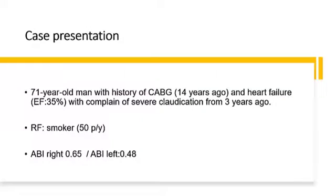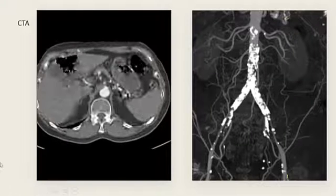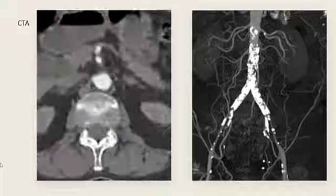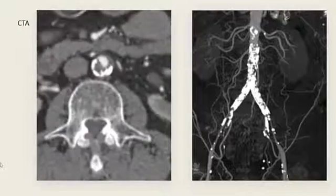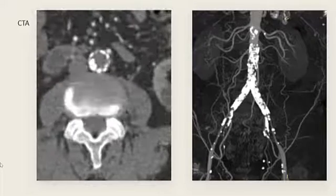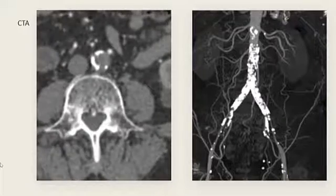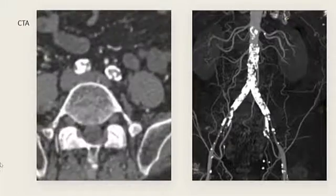Our case is a 71-year-old man with a history of coronary artery bypass graft and heart failure, presenting with severe claudication for three years. Pre-procedural CT angiography showed severe calcified infrarenal aorta and bilateral iliac arteries, with near-total occlusion of the infrarenal aorta and common iliac arteries, with good runoff at the external iliac arteries.